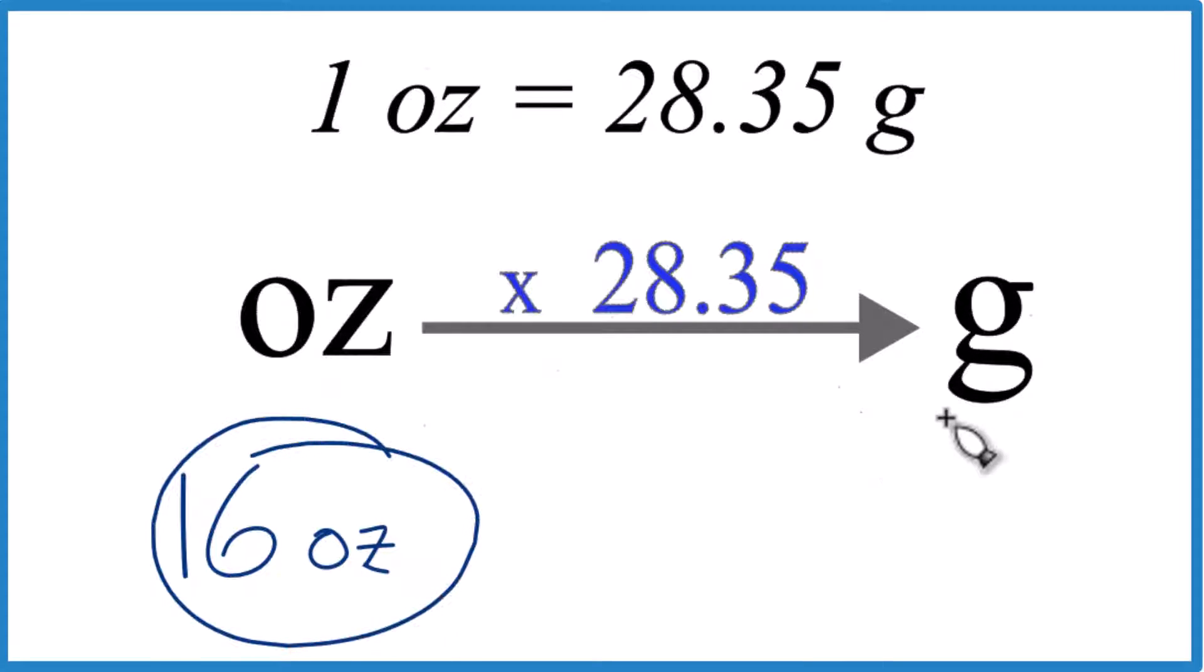Let's convert 16 ounces to grams. Here's how you do it. One ounce, that's 28.35 grams. We call that a conversion factor and we need it when we go from ounces to grams.